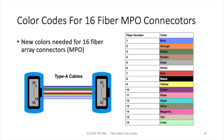MPO connectors typically have arrays of 12 fibers and sometimes two rows, so you have 24 fibers. The latest versions, however, also have an option for rows of 16 fibers, so a single connector can have 16 or 32 fibers to connect. In order to deal with 16 fibers, there has been an expansion of the 12 fiber color standard for fibers 13 through 16, just for this style of MPO connector with 16 fibers.